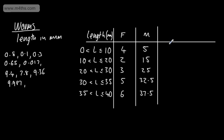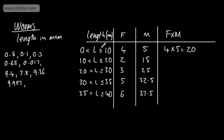We need a column for frequency multiplied by the midpoint. Instead of the discrete values 0, 1, 2, 3 from before, we're now working with continuous data, taking the midpoint. So 4 × 5 = 20. What this says is that on average, the total lengths of the 4 worms in the first category would amount to 20 mm.